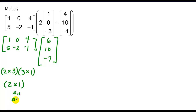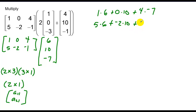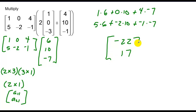The 2 by 1 result has elements at positions 1,1 and 2,1. Multiplying first row by first column: 1 matches with 6, 0 matches with 10, and 4 matches with negative 7. Then second row by first column: 5 matches with 6, negative 2 matches with 10, and negative 1 matches with negative 7. Cleaning up: 6 plus 0 plus negative 28 gives negative 22; 30 plus negative 20 is positive 10, and positive 7 gives 17. There's my 2 rows, 1 column solution: negative 22 and 17.